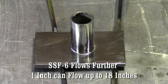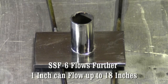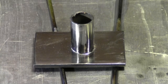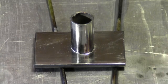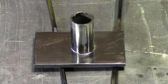The SSF-6 flows further as one inch of rod can flow up to 18 inches. It uses less heat, eliminating warping of the base metal, as well as using less fuel to run the rod.